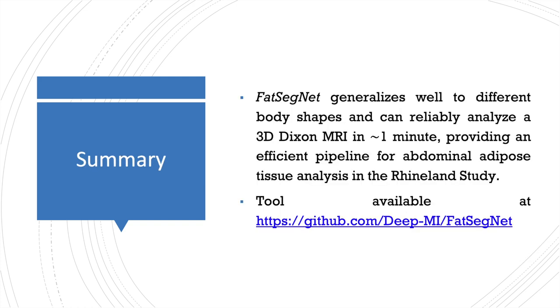FACSEG-NET generalizes well to different body shapes and can readily analyze a 3D Dixon MRI in less than one minute, providing an efficient pipeline for abdominal adipose tissue analysis in the Rheinland study. The tool is available on GitHub.